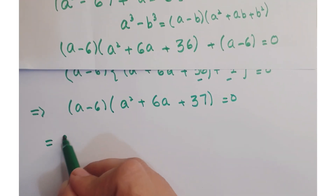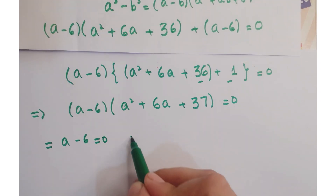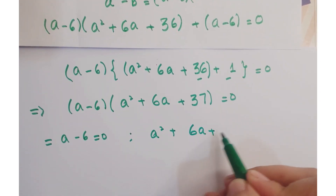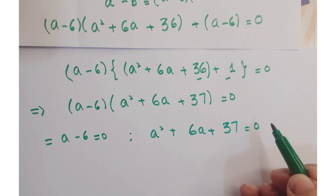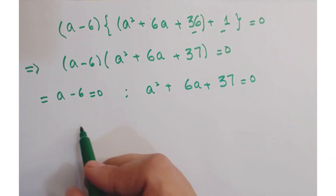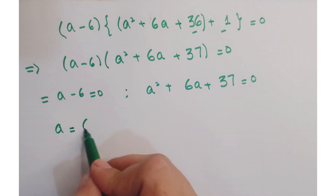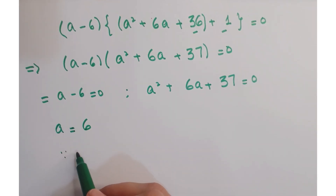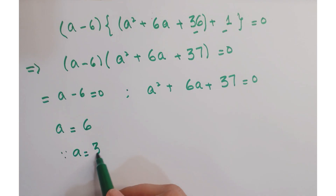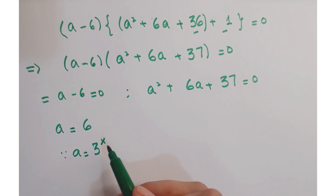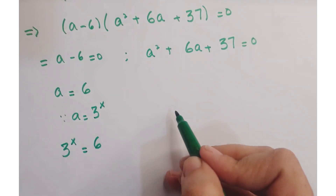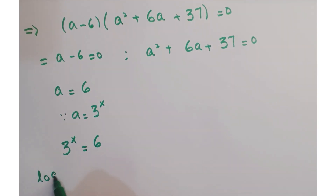This gives a minus 6 into a square plus 6a plus 37 is equals to 0. This implies a minus 6 is equals to 0, so a is equal to 6. Since we assumed a is equal to 3 to the power x, replacing that gives 3 to the power x is equal to 6. We take log on both sides to evaluate x.